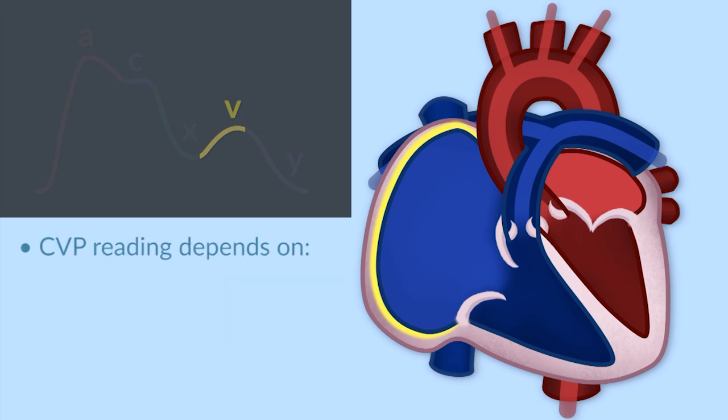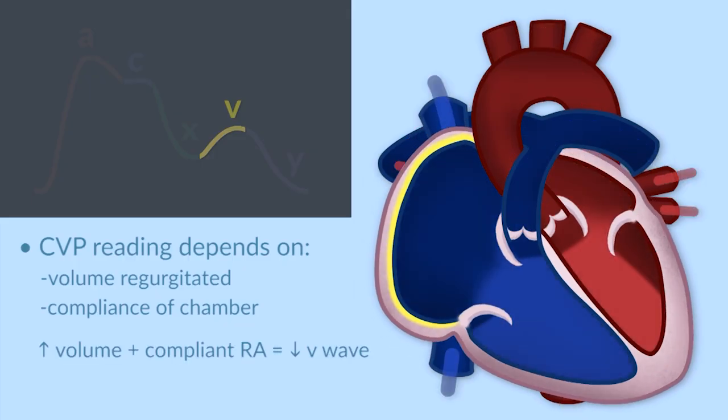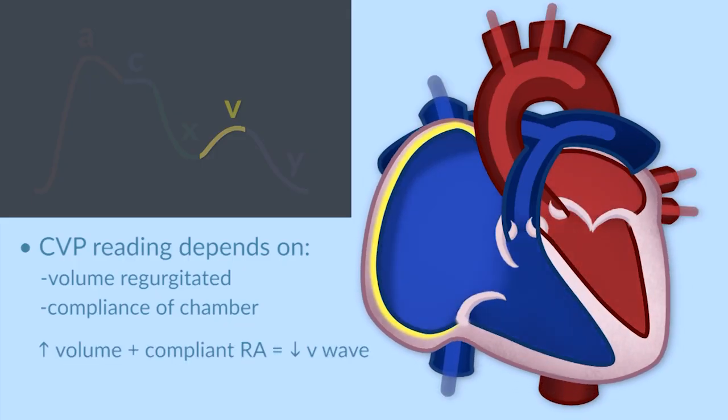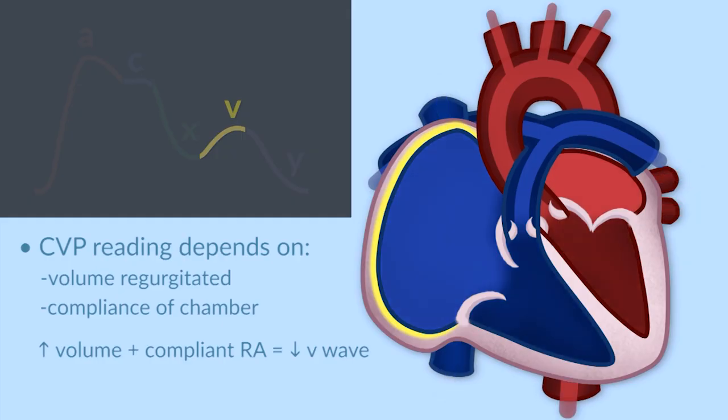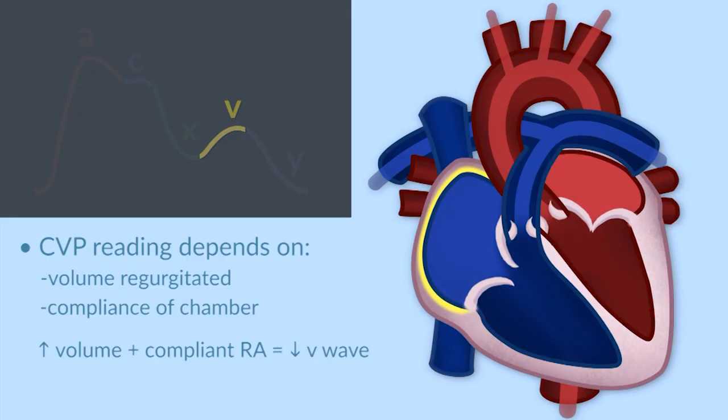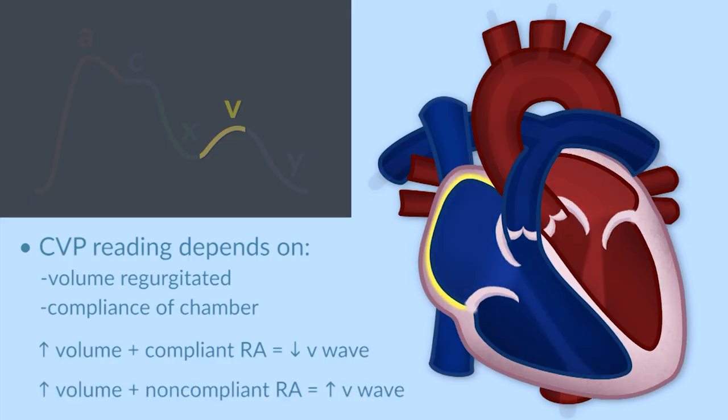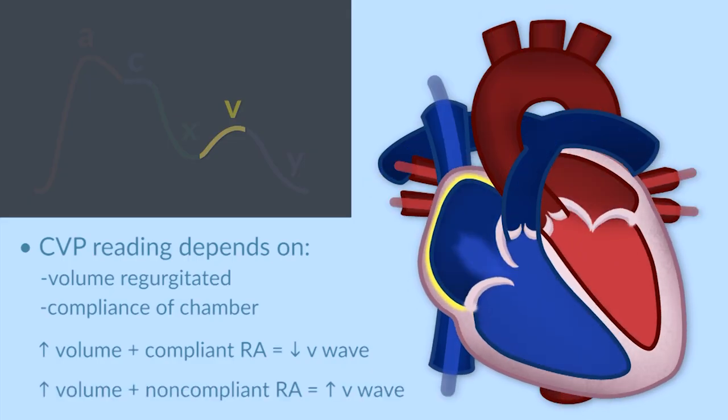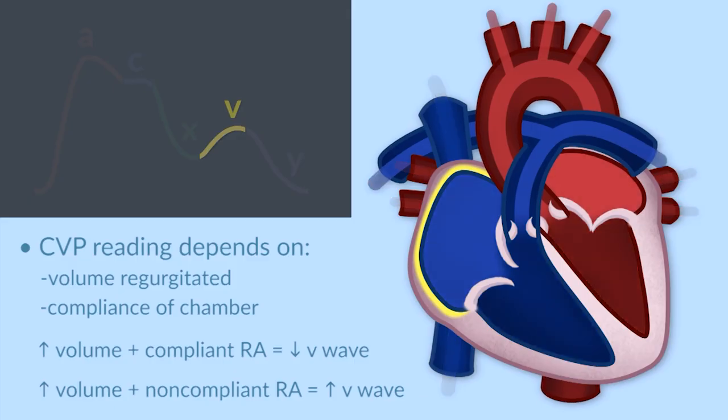it's conceivable that they could regurgitate a lot of volume back into the right atrium without generating a high V wave because the pressure we see on the CVP trace, remember, is due to the combination of the volume regurgitated and the compliance of the chamber it's regurgitating into. So a big volume into a very compliant chamber is not going to give us a big V wave. If a patient acutely developed tricuspid regurgitation and had a very small right atrium and suddenly had a lot of volume regurgitating back into a small non-compliant right atrium, we would expect the V wave to be enormous.